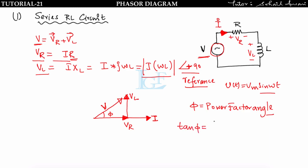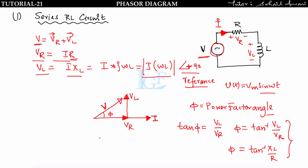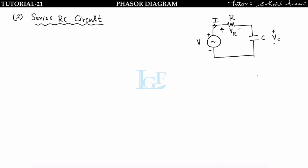To find φ: tan φ = Vl/Vr. Substituting Vl = I·XL and Vr = I·R, we get φ = tan⁻¹(XL/R). The power factor is cos φ = Vr/V. In the RL circuit, voltage leads current (or current lags voltage) by angle φ, giving a lagging power factor.